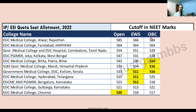The third category is OBC. ESI Rajasthan is again the highest with 584 marks and ESI Faridabad is the second highest with 564. The lowest cutoff for OBC was shared by ESI Patna, SLBS Mandi, and ESI Kollam Kerala — all at 516 marks. So in summary: open category minimum was 520, EWS was 511, and OBC was 516 marks.